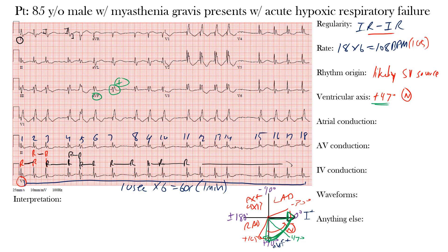Regarding atrial conduction: because we can't make out any clear P waves, and P waves represent atrial depolarization, there is no clear atrial conduction. It may be that chaotic atrial activity is going on above. So in this case we note possible chaotic atrial activity.